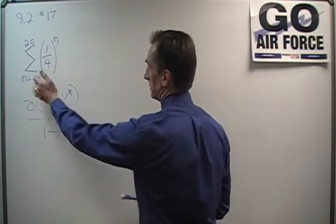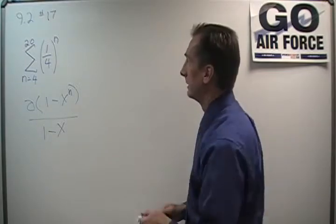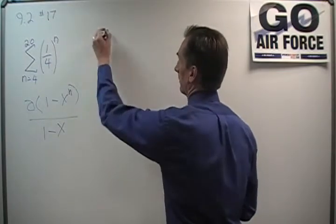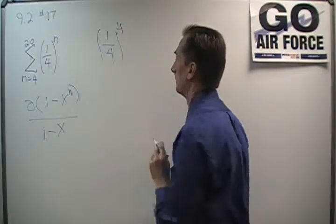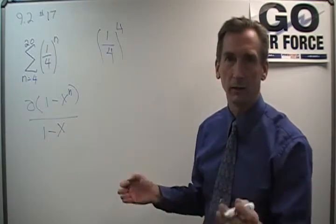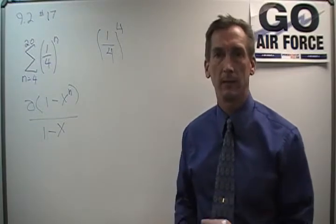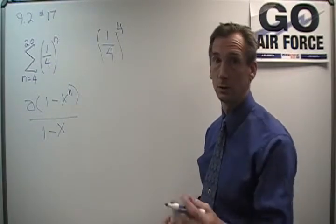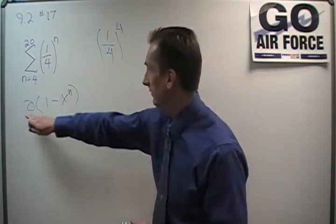So, a, the first term, and I can see the first term is n equals 4. So, I'm going to have 1 fourth to the fourth power. And you may have noticed I changed my series just a little bit, just to let you have the chance to work yours on your own. But the principles are all the same. Okay, so there's a.